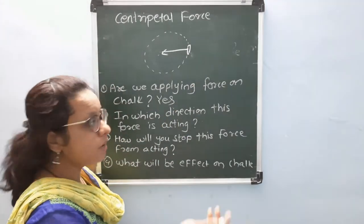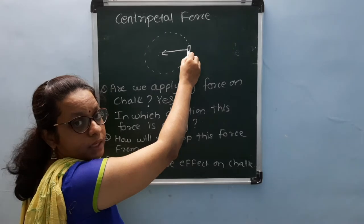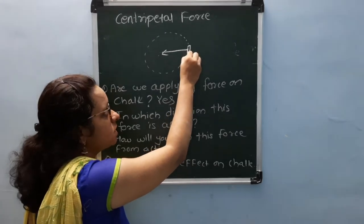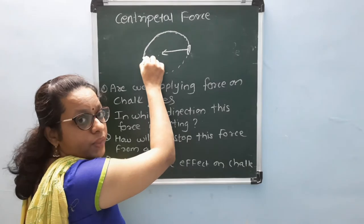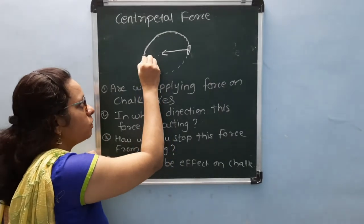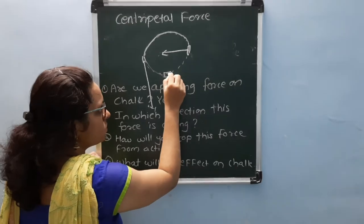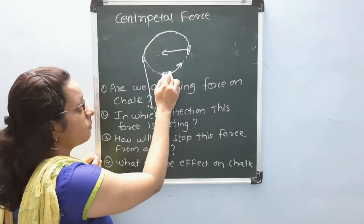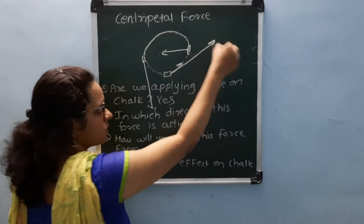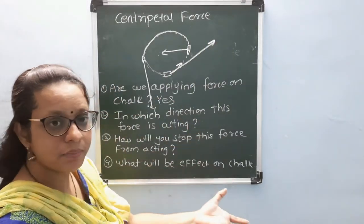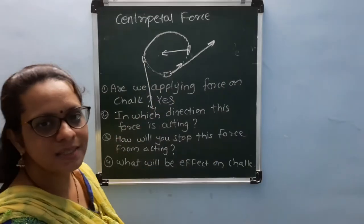What will happen when I stop that force? When I remove the force by releasing the thread, whatever direction the chalk was moving in at that moment, the chalk will continue in that same direction. Suppose the chalk is moving towards this part — moving towards this line — and I stop the force here by removing my hand from the thread, then the chalk will go in that direction. This is centripetal force: the center-seeking force acting on any body performing circular motion is called centripetal force.